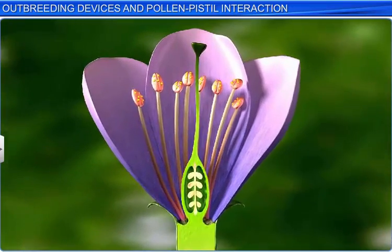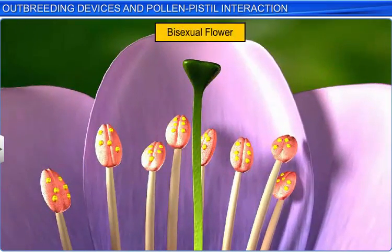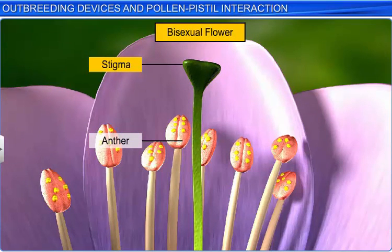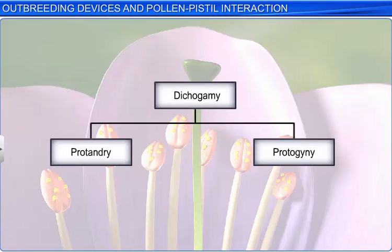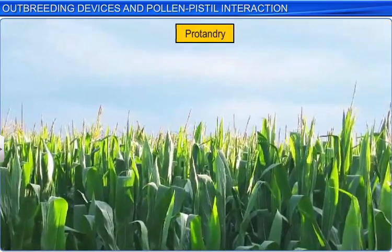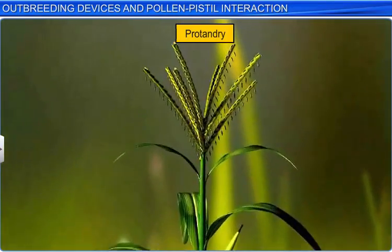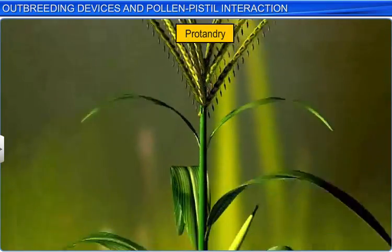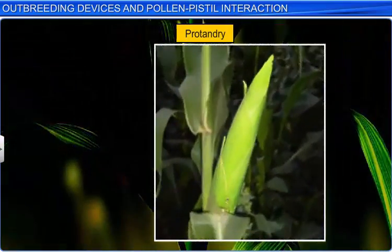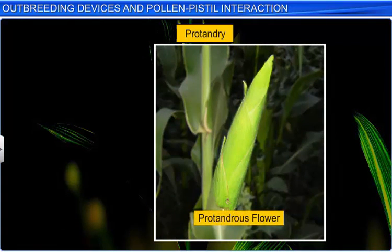In dichogamy, which is observed in bisexual flowers, the anther and stigma of the flower mature at different times. Dichogamy is of two types: protandry and protogyny. In protandry, which is observed in plants such as maize, pollen is released before the stigma becomes receptive — that is, the androecium of the flower matures earlier than the gynoecium.